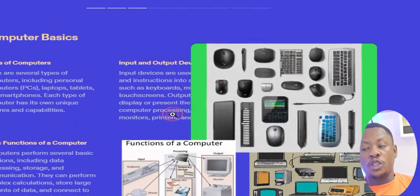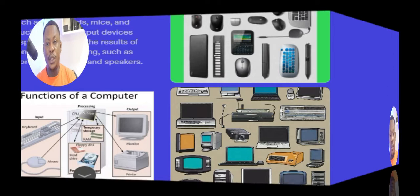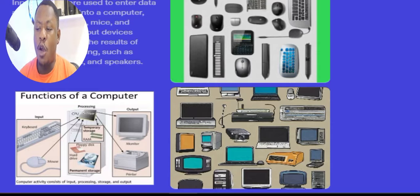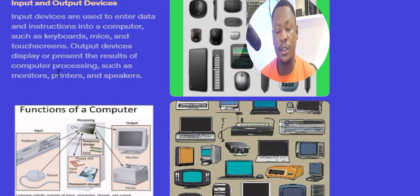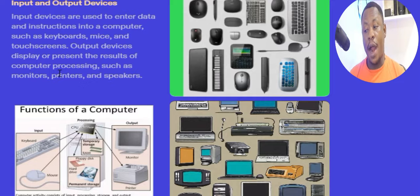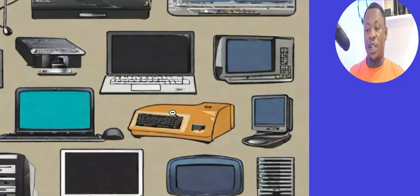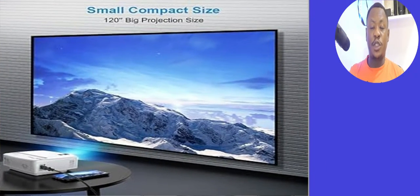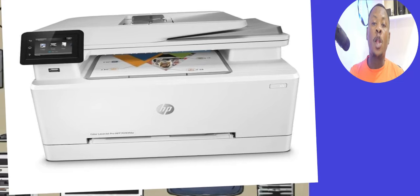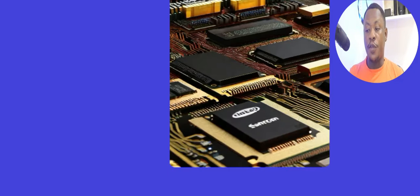Output devices display and present the results of computer processing, such as monitors, printers, and speakers. Looking at some output devices, we can see lots of screens, projectors, speakers, and printers — they are all forms of output devices.